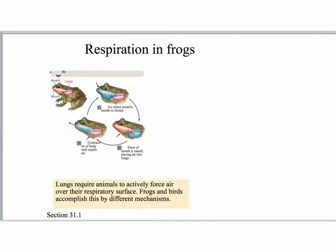When ventilating lungs it usually requires more effort. Amphibians, the first tetrapods to move to land, use a process called buccal pumping to ventilate their basic lung. During this process, air enters the nostril or mouth of the animal, fills up the mouth pocket, and then is forced or swallowed down into the lung. These animals use the buccal cavity, or their mouth, to push air down into their lungs using positive pressure.